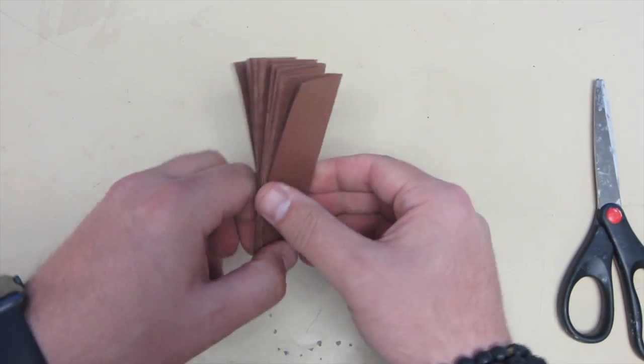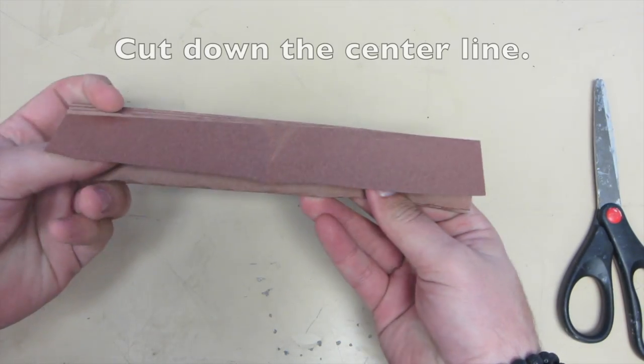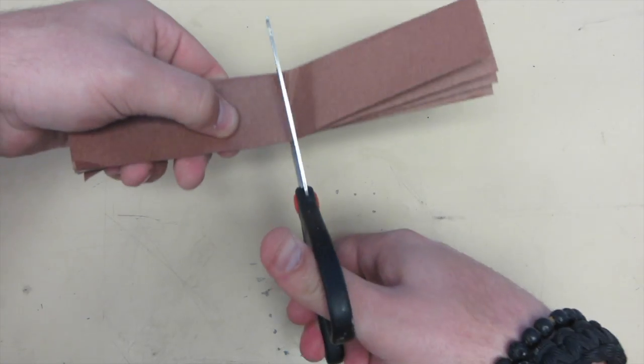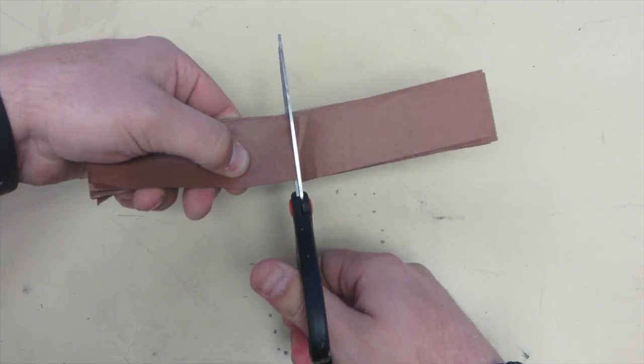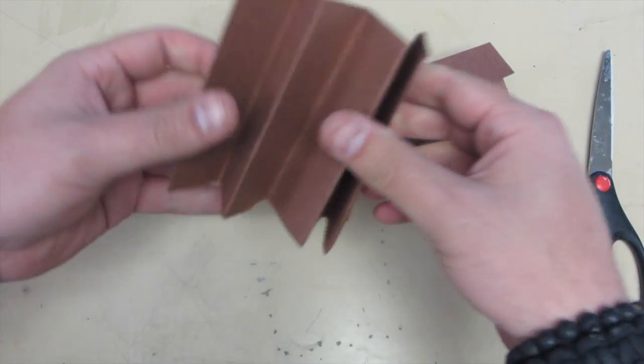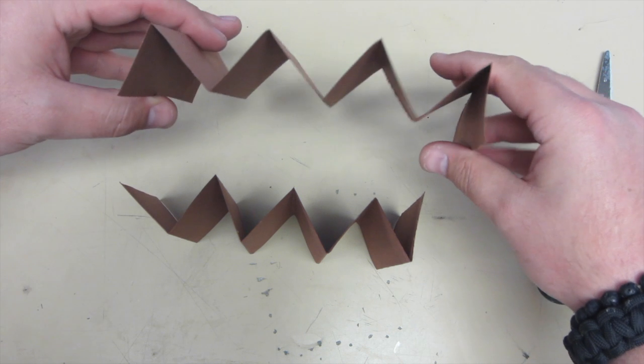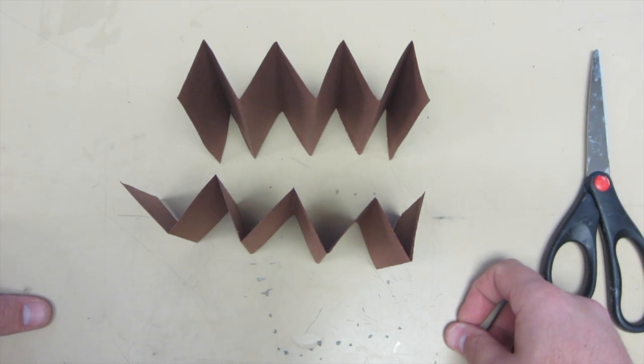Take your scissors, and cut down the center line. This will give you two roughly four and a half inch accordions. This is what you're going to use as the basis for your frame.